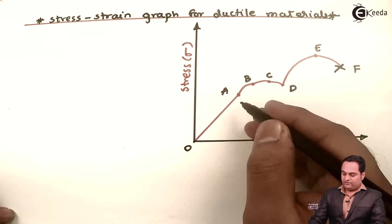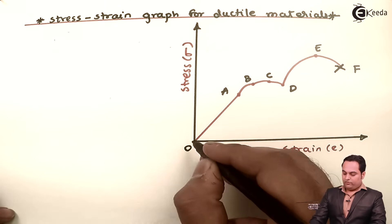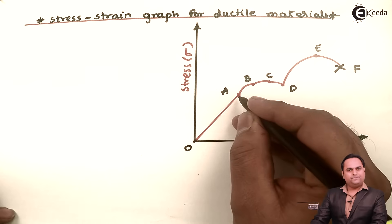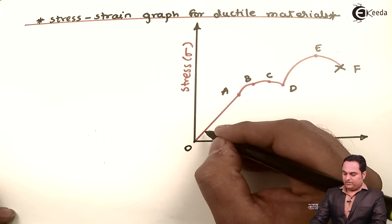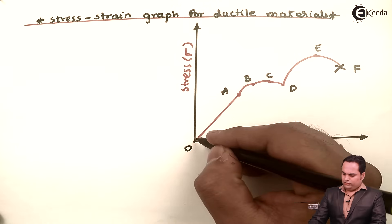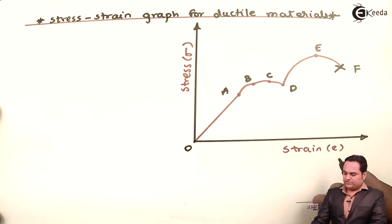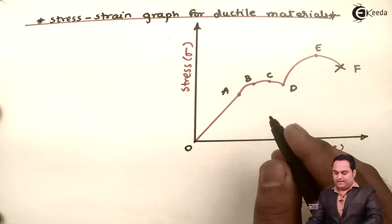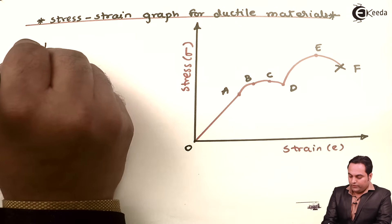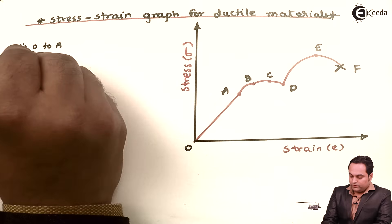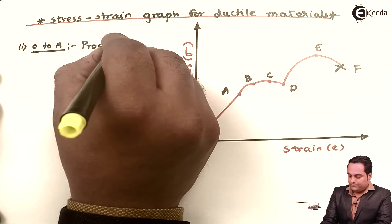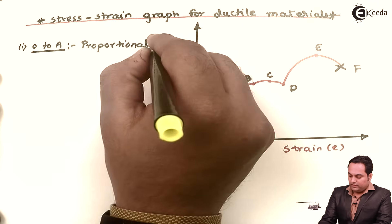In this graph there are various points. From O to A, as we can see, we have an inclined line — it is not a curve. So here we are getting a linear relationship between stress and strain, and I can say that O to A is called the proportional limit.